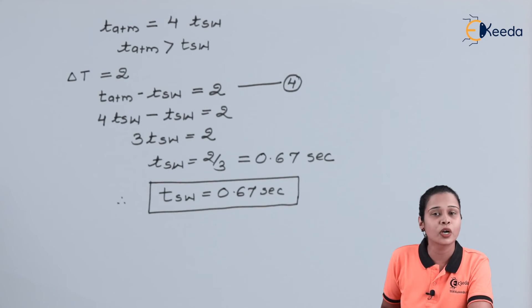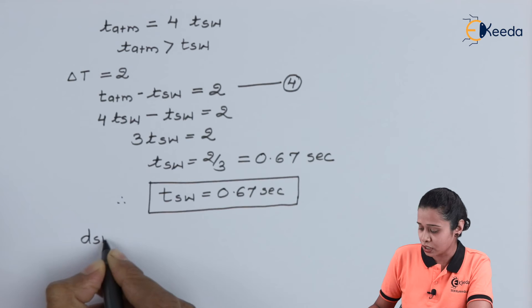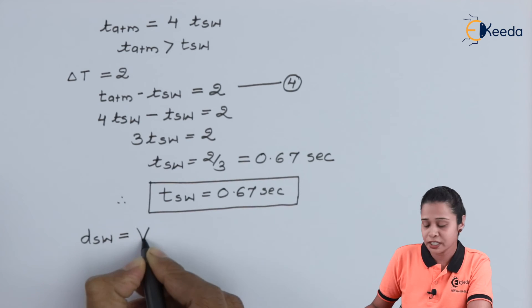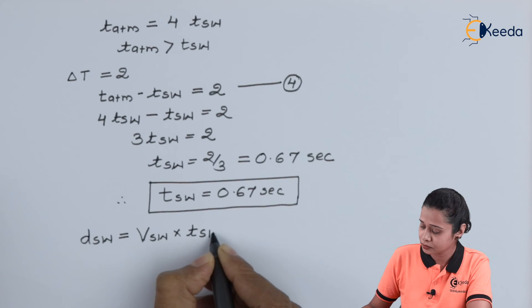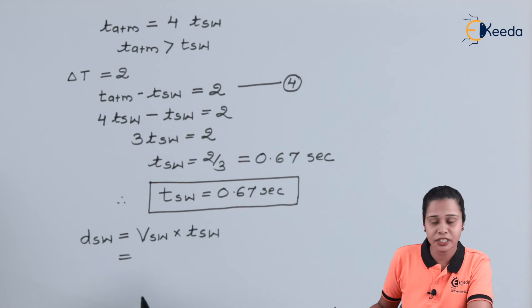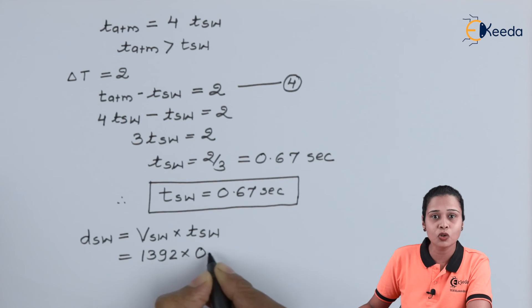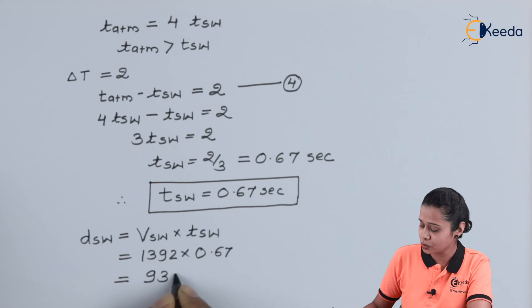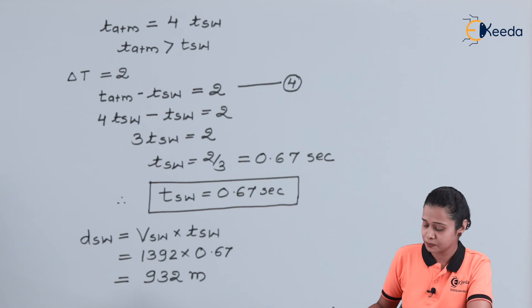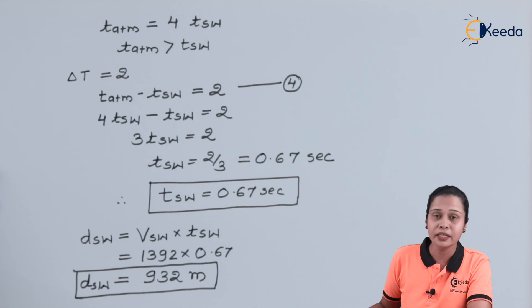Now we find the distance between the two ships. Using: D_SW = V_SW × T_SW = 1392 m/s × 0.67 s = 932 meters. Therefore, the distance between the two ships is 932 meters.